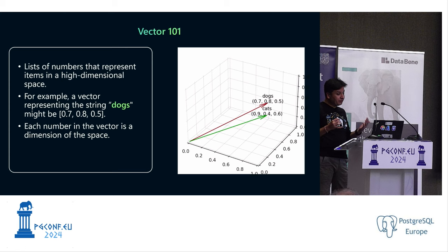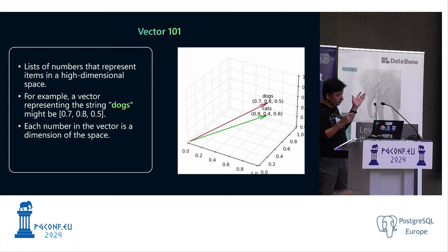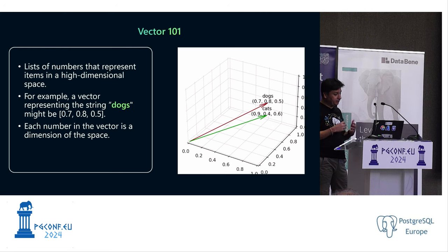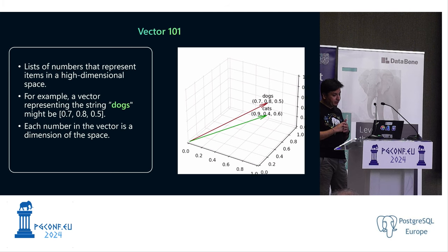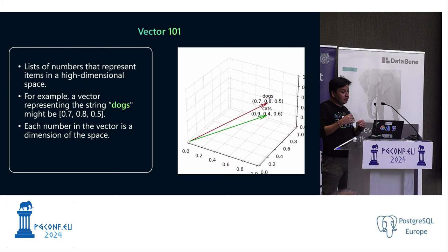Think of a vector as a list of numbers that represent items or anything in a higher-dimensional space. For example, a vector for a dog could be [0.7, 0.8, 0.5]. Each number in a vector is a dimension in that space. In the graph shown, there are three-dimensional vectors. Typically vectors can have hundreds of dimensions — harder to visualize but the principle holds. A vector for 'dog' is compared to a vector for 'cat,' and each vector number is considered a dimension in space.